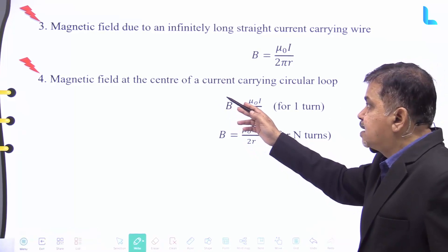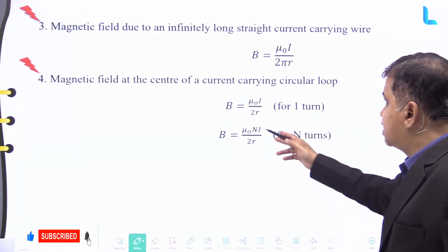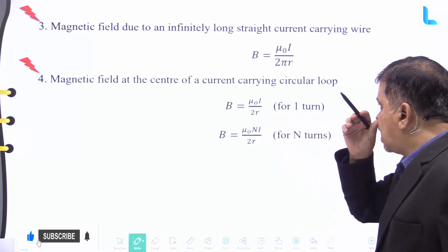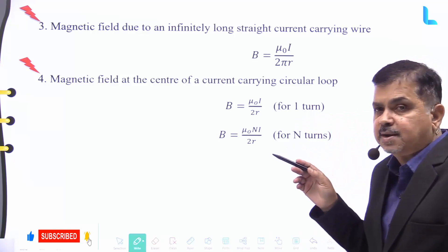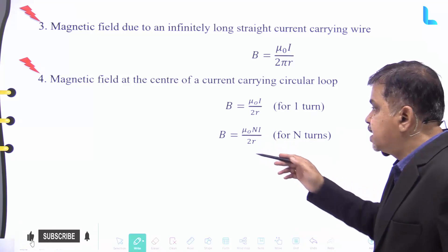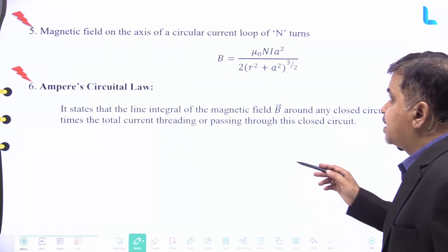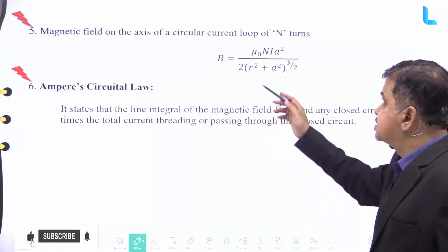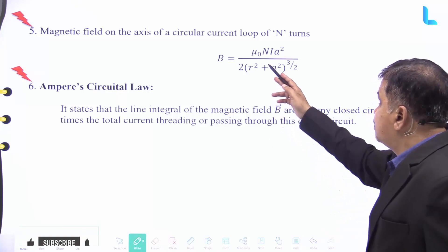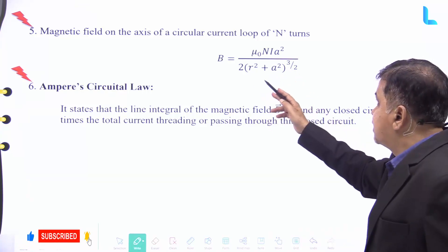The magnetic field at the center of a current-carrying circular loop is given by mu naught divided by two, into i divided by r, for one turn. For n number of turns it is given by mu naught times n times i divided by two r. The magnetic field on the axis of a circular current loop of n turns is given by mu naught times n times i times a squared, divided by two times (r squared plus a squared) raised to the power of three by two.